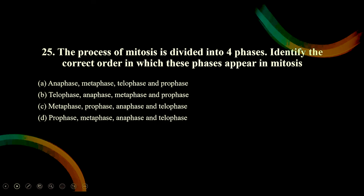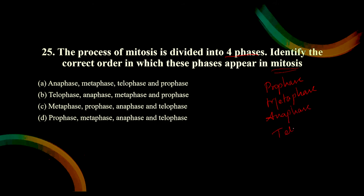The process of mitosis is divided into four phases - identify the correct order. It's a very easy question. The four phases are: prophase, metaphase, anaphase, and telophase. Option A starts with anaphase - wrong. Option B starts with telophase - wrong. Option C starts with metaphase - wrong. Option D gives prophase, metaphase, anaphase, and telophase. So the correct option is D.